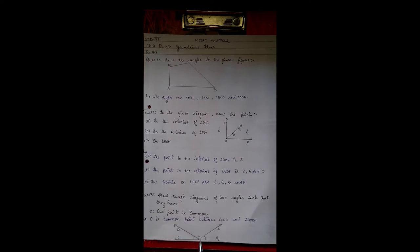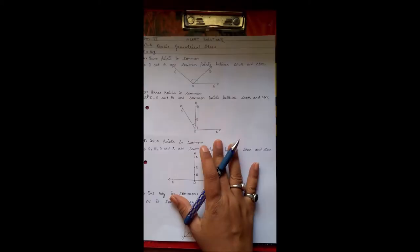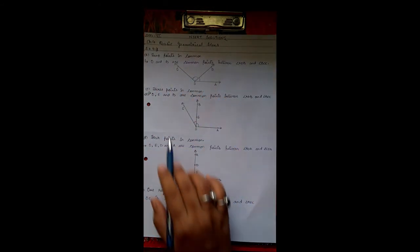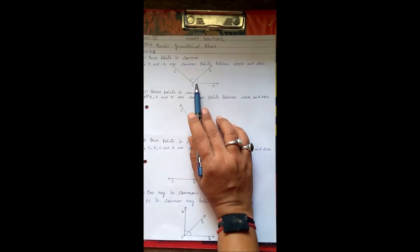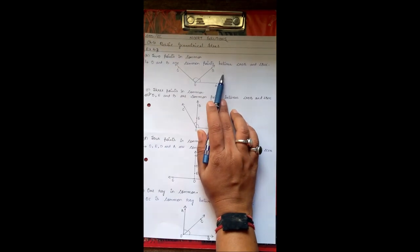Second, two points in common. So we have taken O and B as common points. So this is O and B common point. The angles are AOB and BOC.